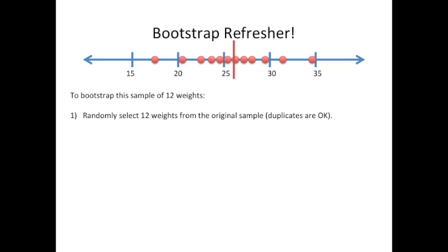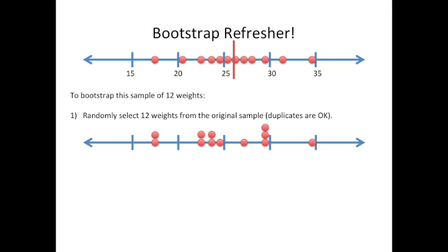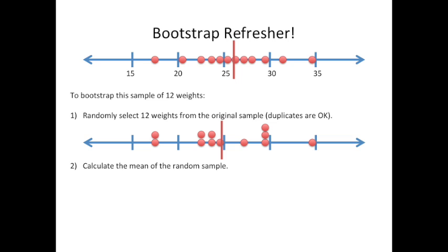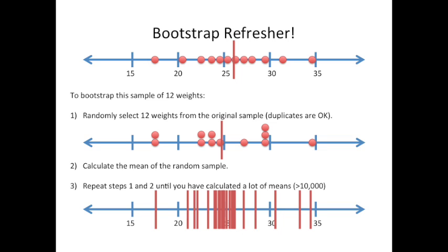To bootstrap the sample, we randomly select 12 weights from the original sample, and duplicates are OK. Here's an example of a bootstrapped sample. We can see that the measurement on the far left was sampled twice in our bootstrap sample, and the measurement to its right wasn't included. This is called sampling with replacement. Now we calculate the mean of the random sample. After we've calculated the mean of our first random sample, all we have to do is repeat steps one and two until we've calculated a lot of means — sometimes more than 10,000. And here's what it looks like when we've calculated a lot of means. That's all there is to bootstrapping.